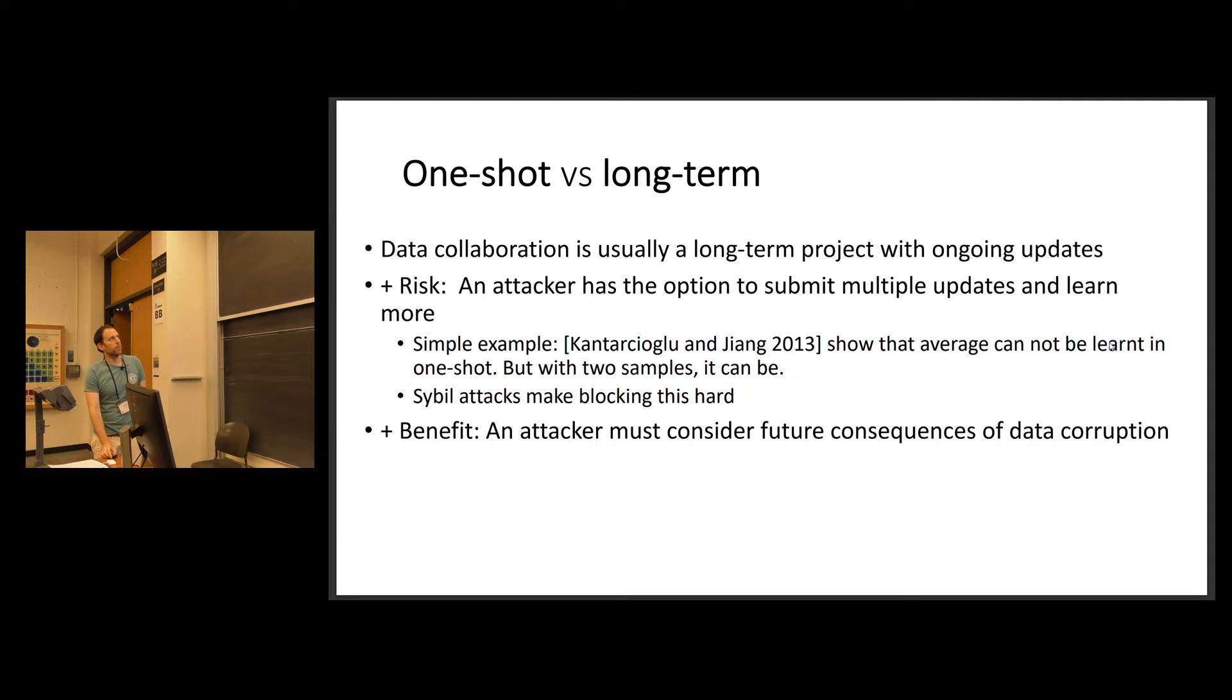The benefit of a long term cooperation or communication model is that you don't want to ruin this communication. So one attack you could do is you send the true data, then after the true data, you send some garbage data. And now you got the true result, everyone else got a bad result. But the reason you wouldn't do it maybe is because you still want to keep updating with new data you have. And once you already sent this garbage data, you don't know what's going on in the mechanism. So this is something that is kind of prohibiting attacks.